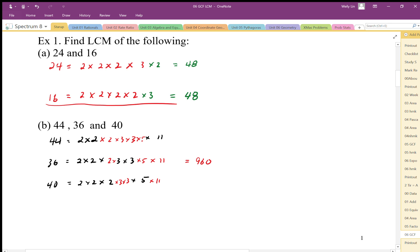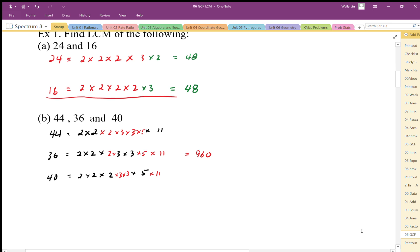960. Let's double check that. That's going to be 36 times 11, oh that's not 960. 36 times 11, so I've got 2 times 2 times 3 times 3 is 36 times 10 is 360. It's 3,960.